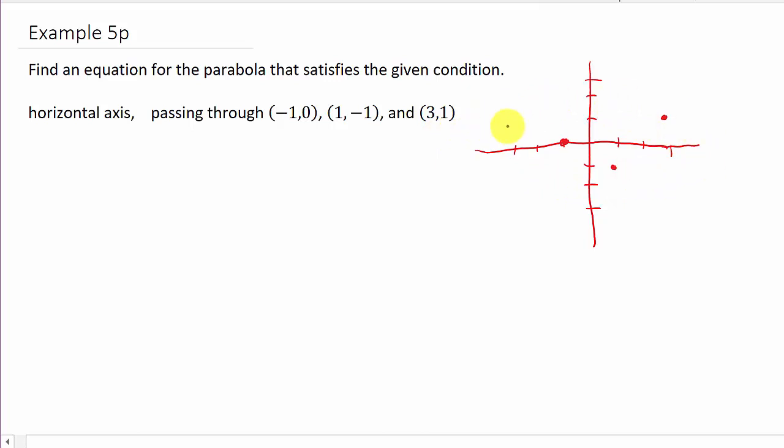So, you know, the form that we saw in an equation that opened right and left, we had y minus k squared equals 4p times x minus h. Alright.